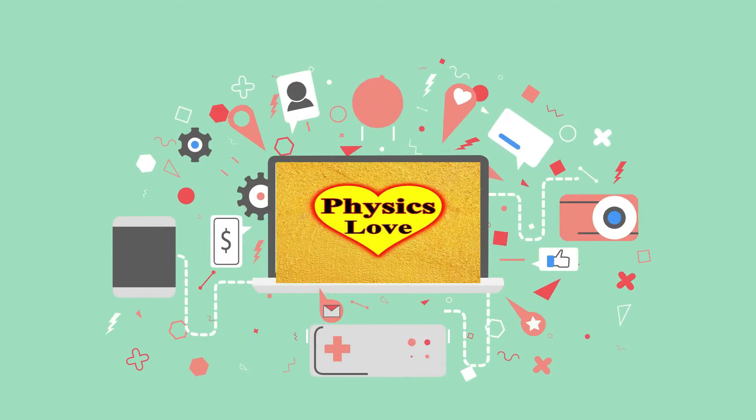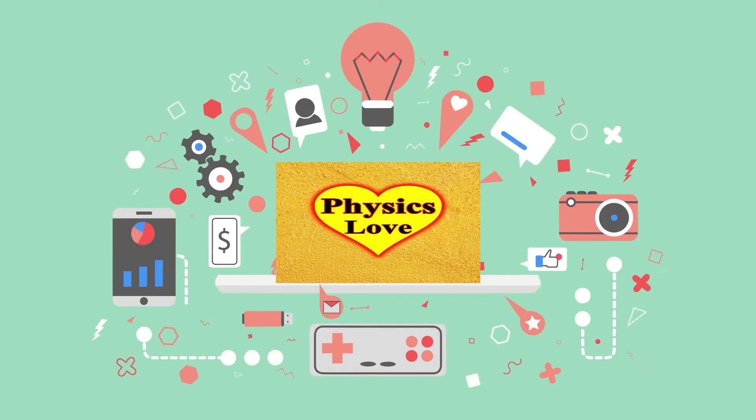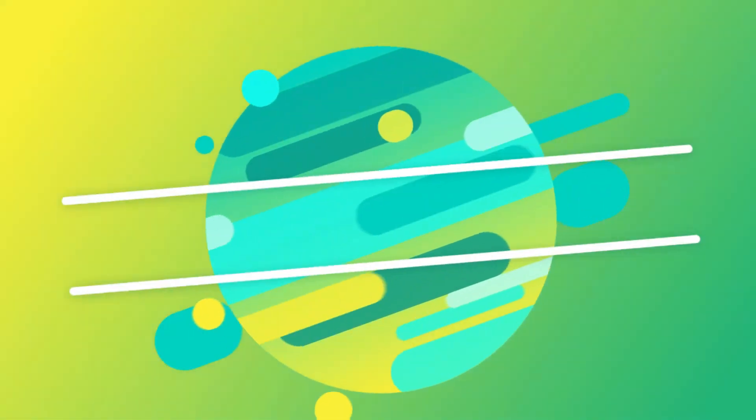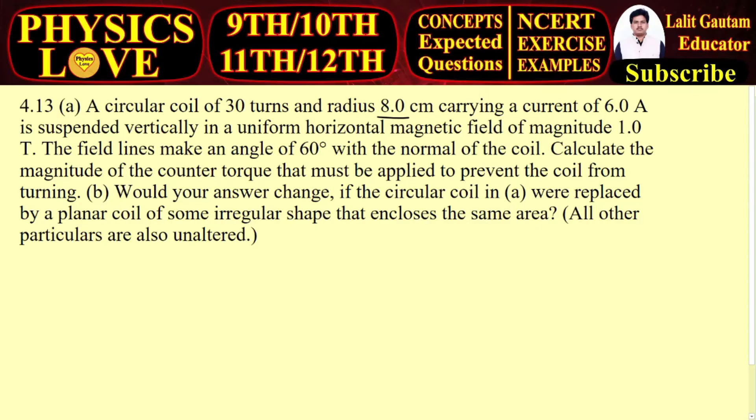Howdy physics lovers, question number 4.13: A circular coil of 30 turns and radius 8 centimeters carrying a current of 6 amperes is suspended vertically in a horizontal uniform magnetic field of magnitude 1 tesla.